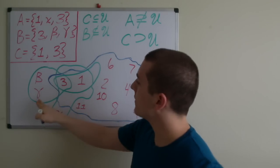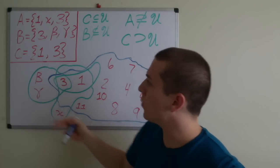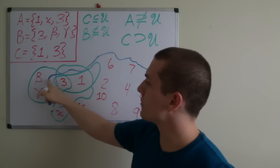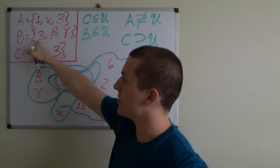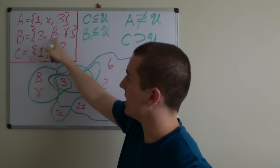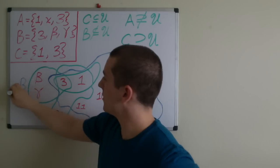So if you look at this green line, what set would that be? Well it contains elements 3, beta, and gamma. So does B. B contains 3, beta, and gamma. So this would be the set B.